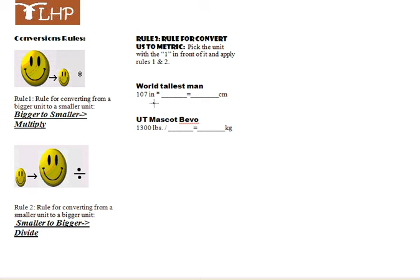We have 107 inches is equal to how many centimeters, and how many pounds is equal to kilograms. Well that's US to metric and US to metric. So what we do is we look at the list again.